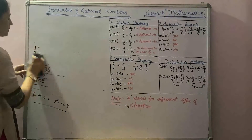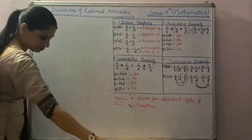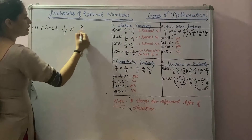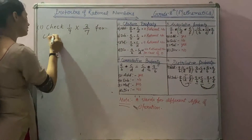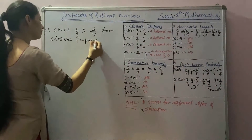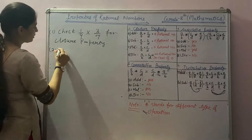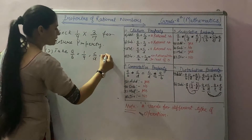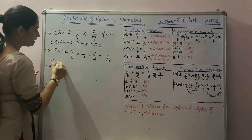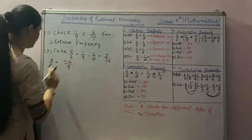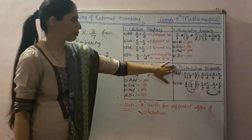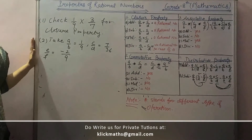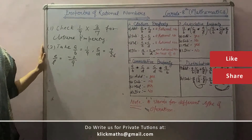Now I will give some exercises for your practice. First question: check 1 by 9 multiplied by 3 by 7 for closure property. Second: take A by B equal to 1 by 9, C by D equal to 7 by 36, and E by F equal to minus 2 by 9 — check these for distributive property for addition. Do this exercise and put your answer in the comment box. Please share, subscribe and like this video.